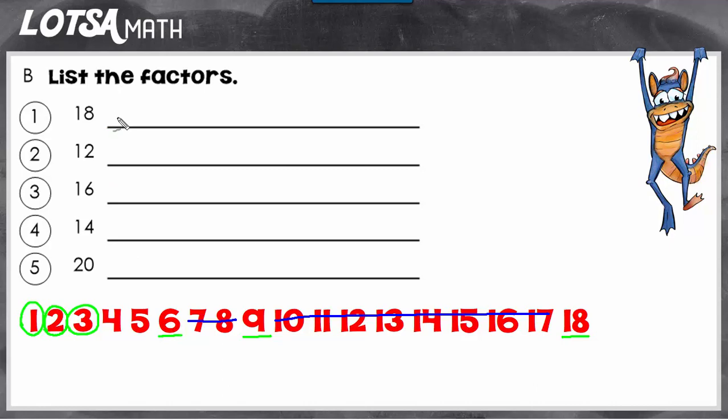So the factors of 18 are 1, 2, 3, 6, 9, and 18.